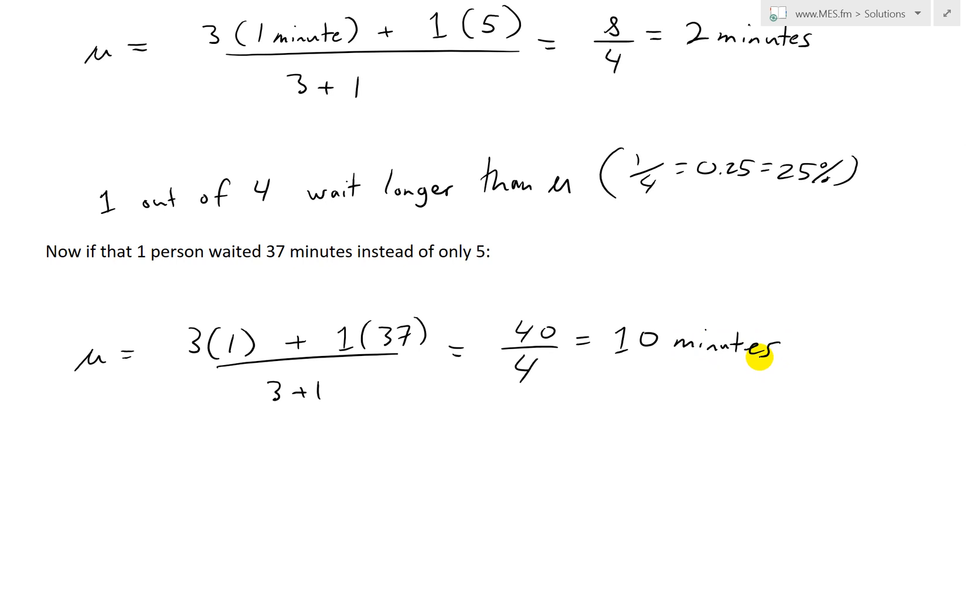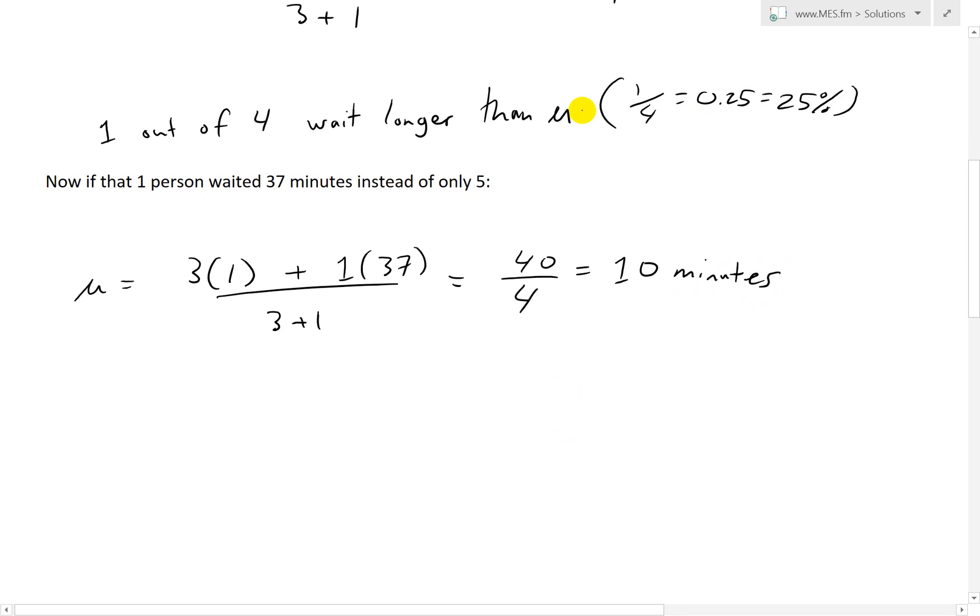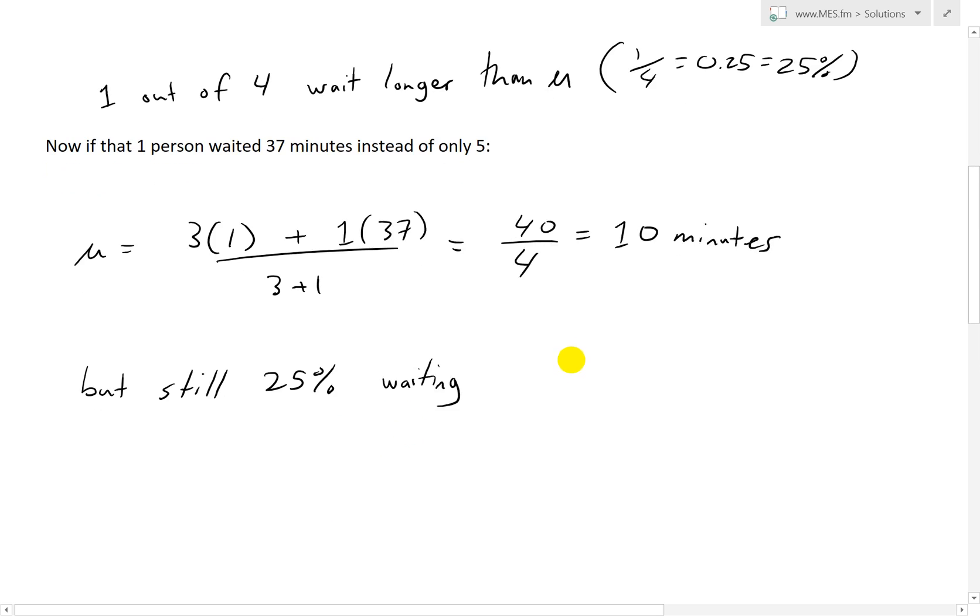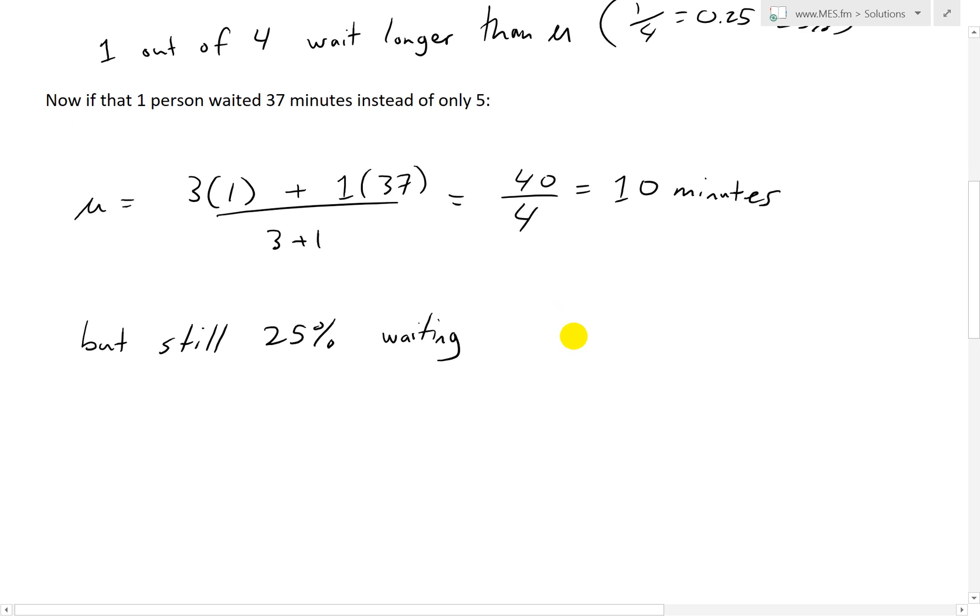That's 10 minutes, but nothing changes in terms of the percentage of people waiting longer. We still have 25% waiting longer than the average, which is now 10 minutes. The average doesn't depend directly on the number of people waiting longer than or less than the average.